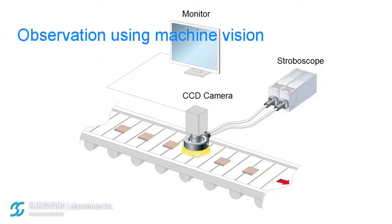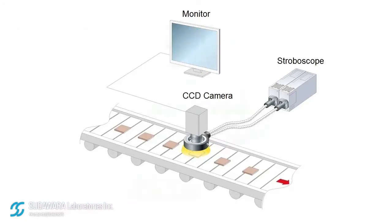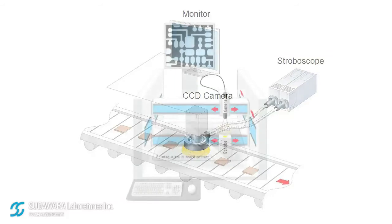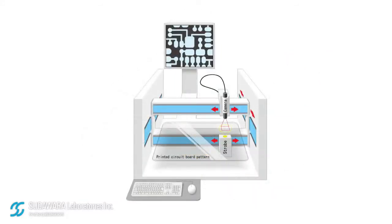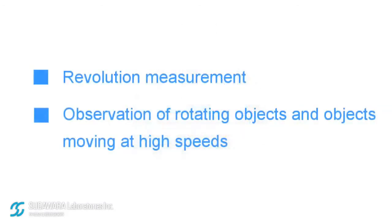Stroboscopes are employed as light sources for image processing. An example of this is using a CCD camera to capture images of test objects moving at high speeds. Using stroboscopes in these ways makes it possible to easily measure revolutions or observe objects that are moving at high speeds.